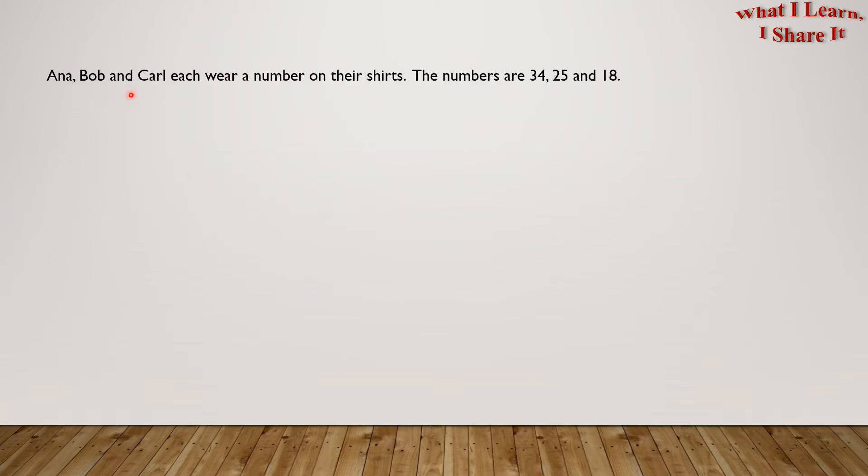Anna, Bob, and Carl each wear a number on their shirts. The numbers are 34, 25, and 18. So here's the shirt with number 34 on it, the shirt with number 25 on it, and the shirt with number 18 on it.